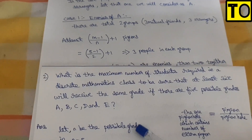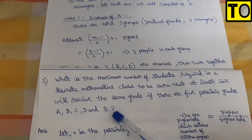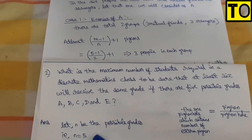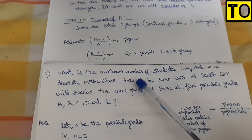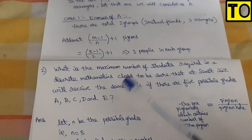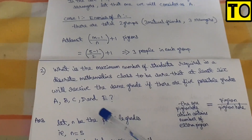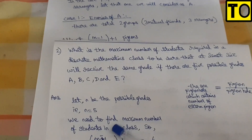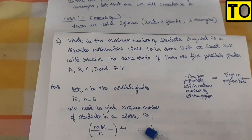Let N be the number of possible grades. There are five grades: A, B, C, D, E. The total number of pigeon holes is 5, so N equals 5. The number of pigeons is the number of students required. We need at least 6 students to receive the same grade. Using the formula: M minus 1 divided by N plus 1 equals 6.